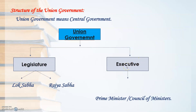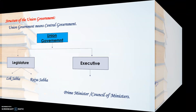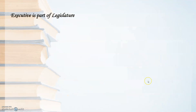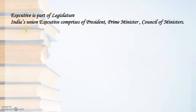Executive means the people who actually make the people of India follow rules and laws. That is done by the Prime Minister and Council of Ministers. Executive is a part of the legislature — without legislature, executive cannot take place. India's Union Executive comprises the President, Prime Minister, and Council of Ministers.